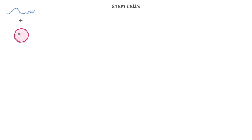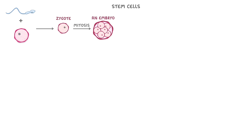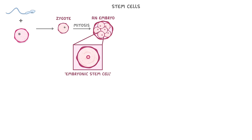To understand why this is important, let's consider how human life starts. When a sperm cell fertilizes an egg cell, it forms a single cell called a zygote. This cell is now its own organism, and during the following few days it will divide by mitosis over and over again to form a small group of cells called an embryo. We call these cells embryonic stem cells.